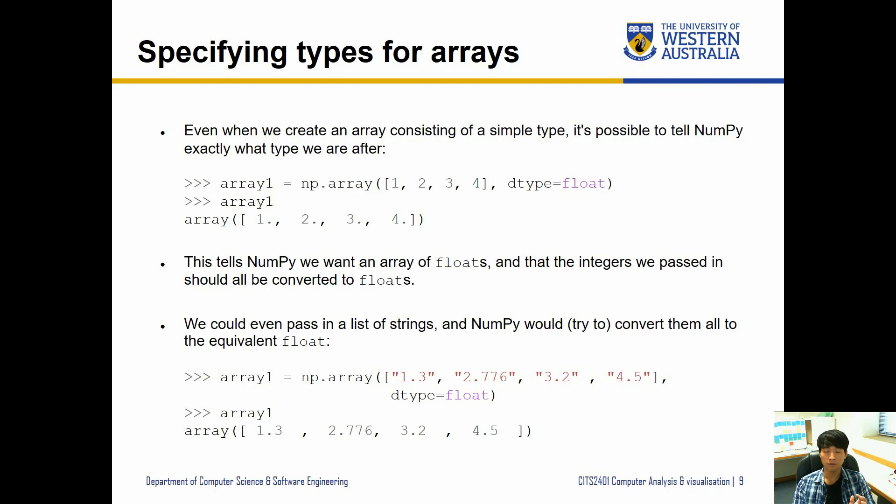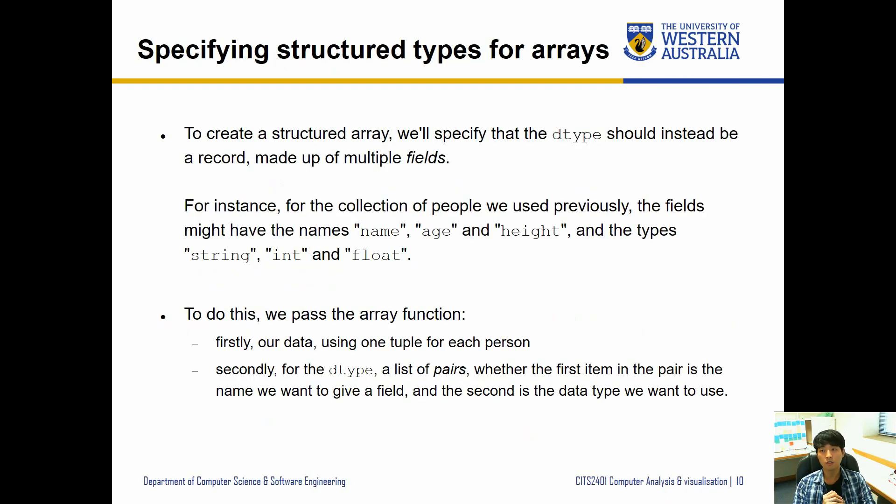Now we can specify the structured types for arrays. To create a structured array we'll specify that the dtype should instead be a record made up of multiple fields. For instance, for the collection of people that we had before, an ideal dtype might be strings, integers, and then floats. We have a couple of steps: first our data uses one tuple for each person, and secondly we're going to have a dtype specified for each field.